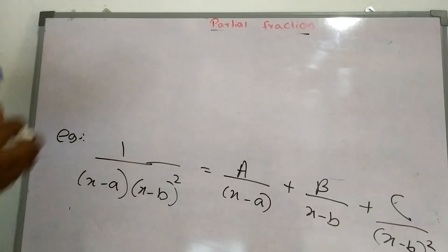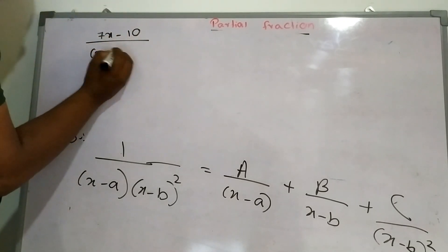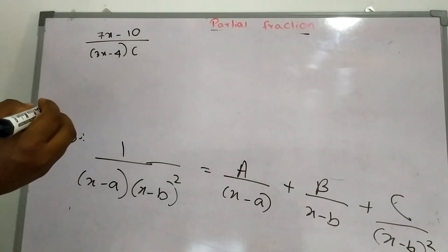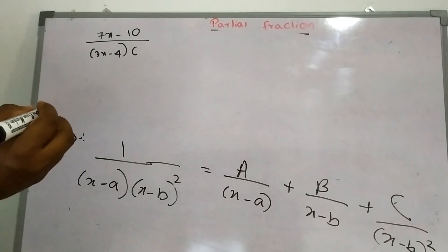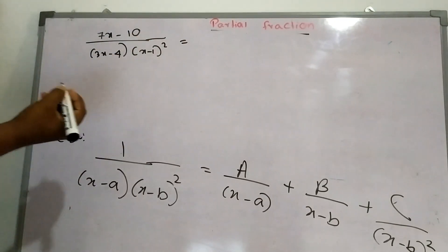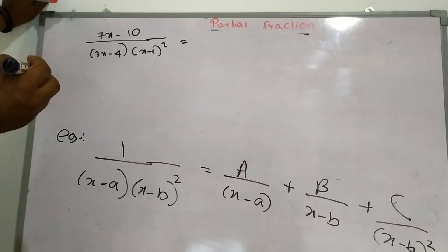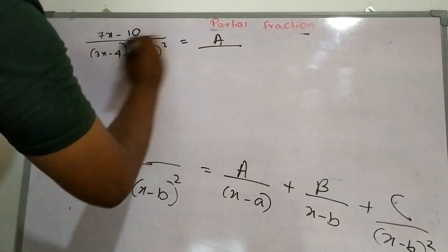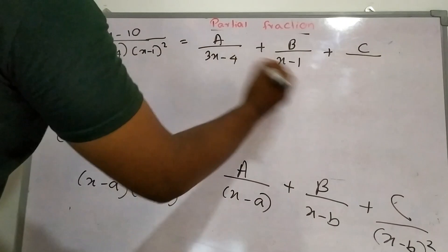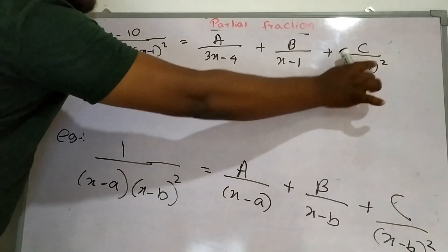Let's consider the example: (3x minus 4) over (x minus 1)(x minus 1) squared — that is, (x minus 1) cubed overall. Here we have a second power factor, so we set up partial fractions accordingly.